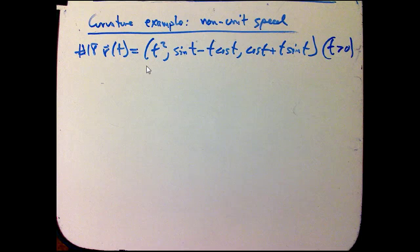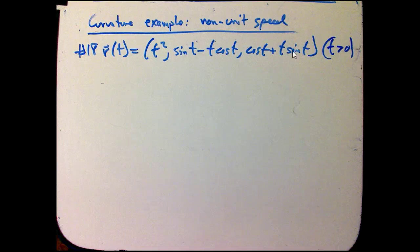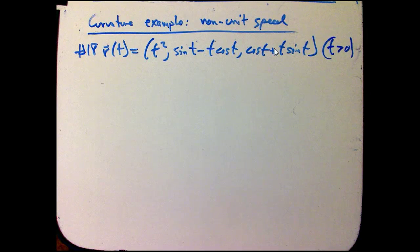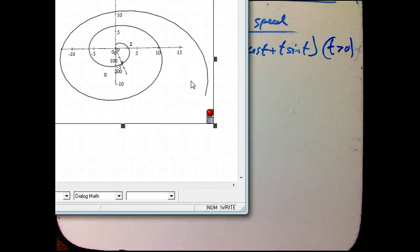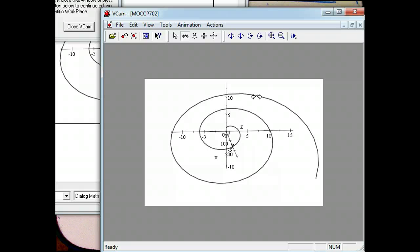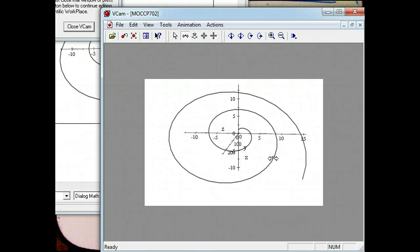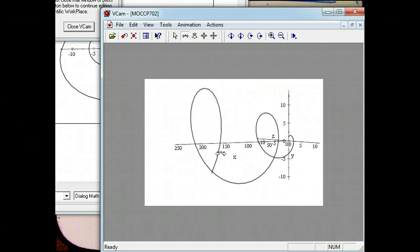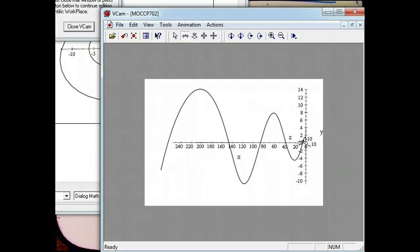For t greater than zero, it's going to be progressive and increasing in velocity in the x direction. If we ignore the sine and cosine for a second and just concentrate on the t cosine and t sine, that's going to be some sort of spirally thing in the yz plane. The sine and cosine might modify it a little bit, but when t is large it won't matter too much. It's going to be progressive in the x direction and spiraling in the y and z direction. You can see that it goes further and further with each spiral because of the t squared.